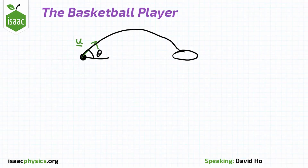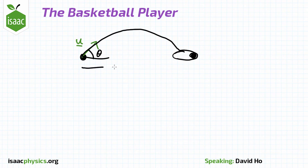This question is exactly the same as the previous part of the question, except now we wish for the basketball to touch the right-hand edge of the hoop so that we maximize the value of theta. The hoop's radius is still twice that of the basketball, so the distance that the basketball must now travel is given by L minus A.